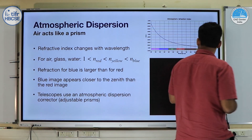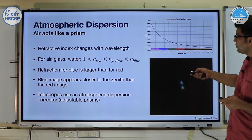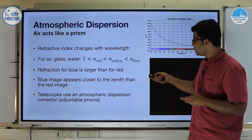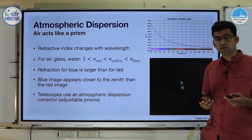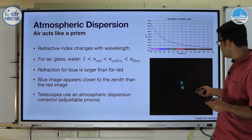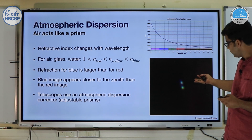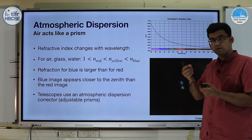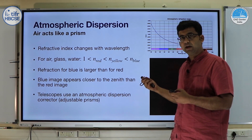This effect is also wavelength dependent. The atmosphere not only acts like a slab of glass but also like a prism — the refractive index of air changes with wavelength. Similar to glass and water, the refractive index is higher at blue wavelengths than at yellow, and higher at yellow than at red. This means refraction is larger for blue light than for red. The blue part of a star will appear closer to the horizon than the red part. This is visible in an image of a double star close to the horizon, where the top of the star appears bluer and the bottom redder. Telescopes must use atmospheric dispersion correctors, or adjustable prisms, to correct for this effect and prevent blurring.